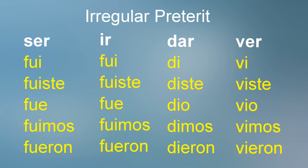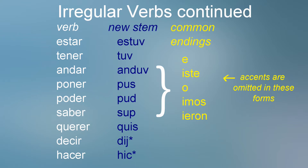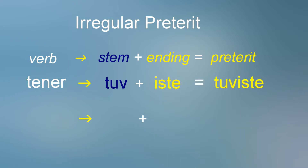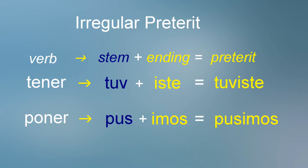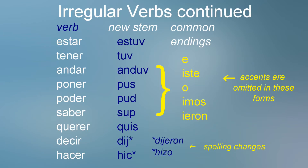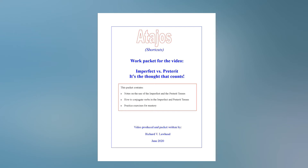There are many irregular preterite tense verbs. Note how with some the entire verb is changed — these will have to be memorized individually. There are also irregular verbs in the preterite tense that change their stems and share a common set of endings. There are some spelling changes to maintain the correct pronunciation as well. In your Atahos packet are notes and several exercises for regular and irregular preterite verbs.